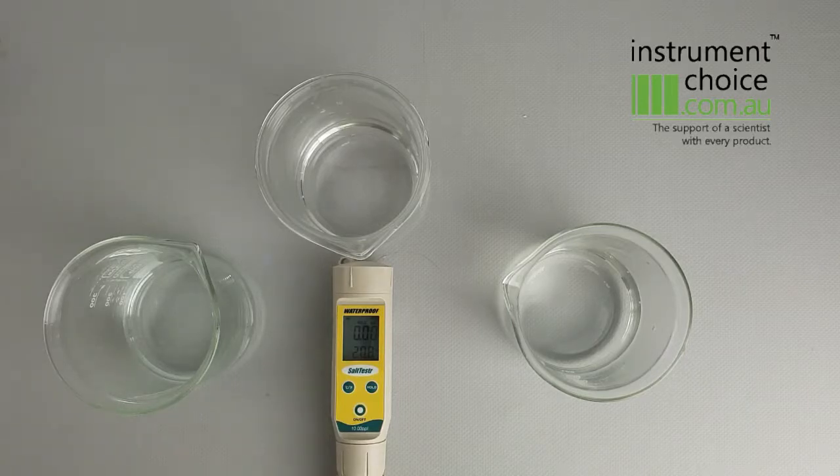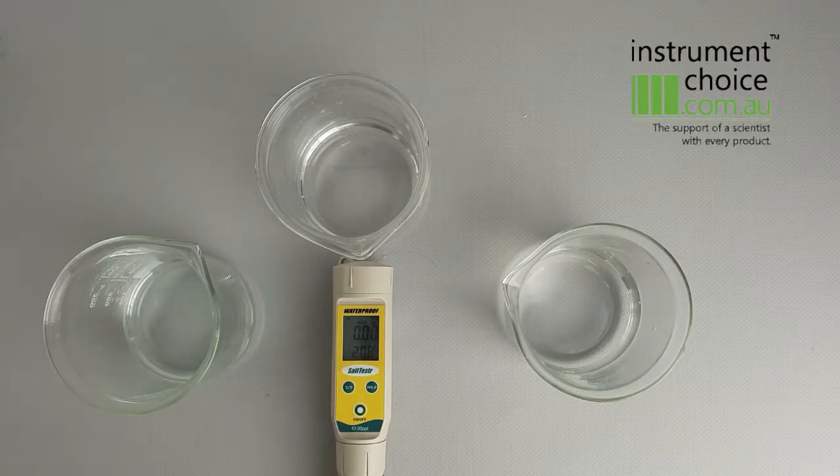When you first get the meter, you need to soak it in some isopropyl alcohol for a couple of minutes. You can get that at your local chemist.